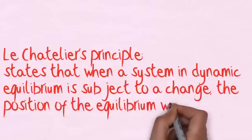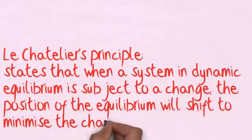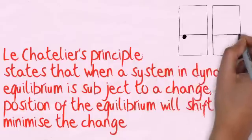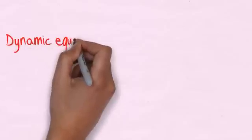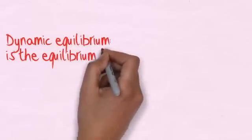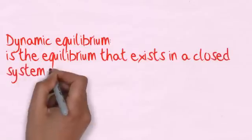Le Châtelier's principle states that when a system in dynamic equilibrium is subject to a change, the position of the equilibrium will shift to minimise the change. Another common exam question.